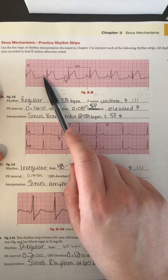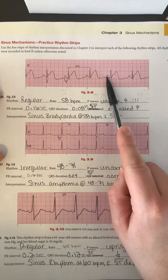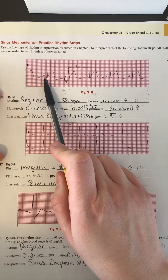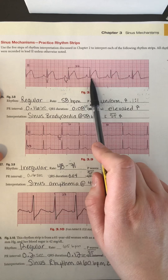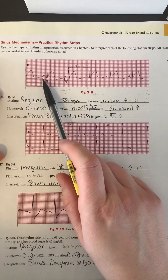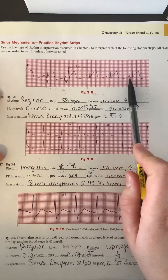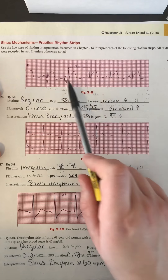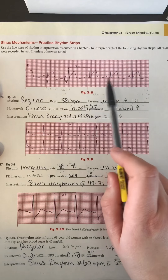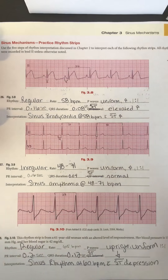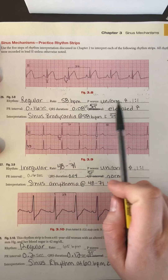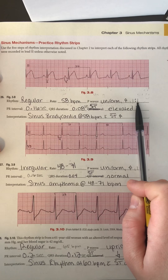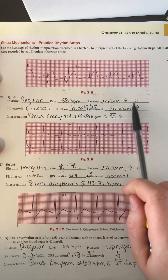Next I want to look at the P waves. These are the small waves that appear before the QRS complex; they represent depolarization of the atria. I want to make sure I have one P wave for every QRS complex — and I do. They're all upright, meaning a positive deflection, and they all look pretty much the same. There are maybe some slight differences, but not enough to make it a wandering pacemaker. So they're uniform, upright, and one-to-one — meaning one P wave for every QRS complex.